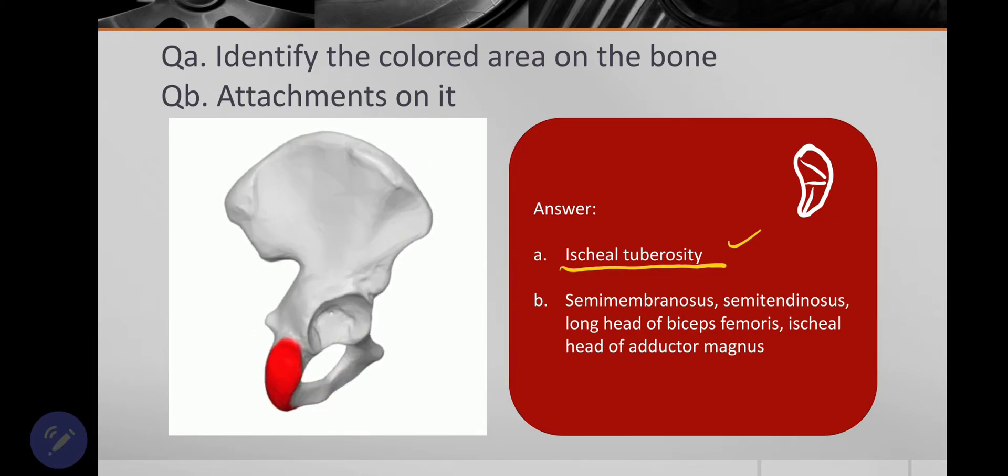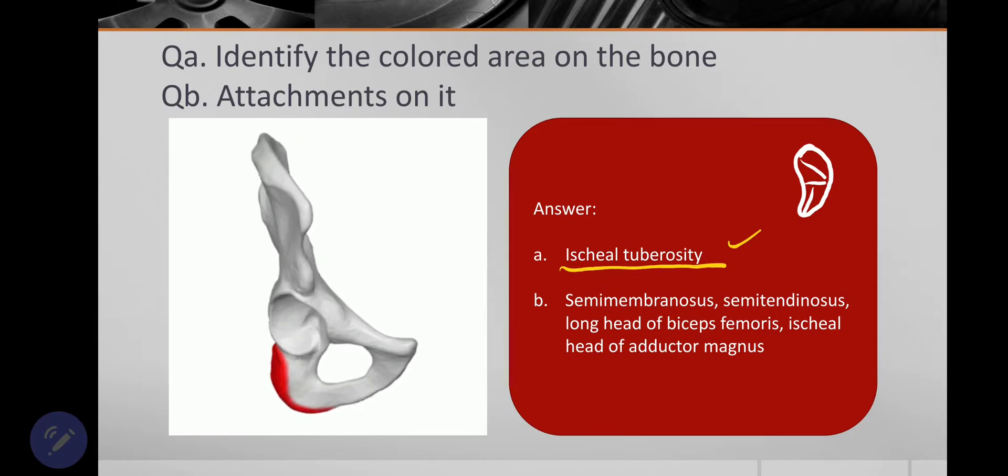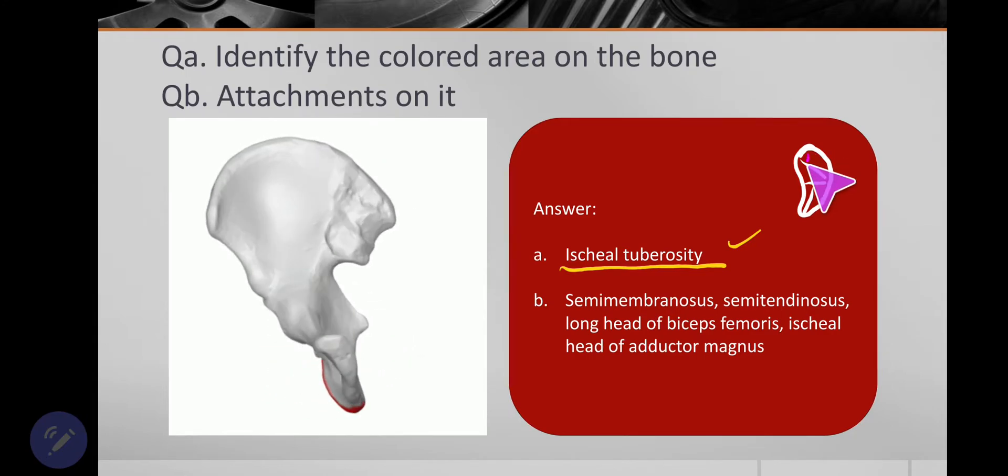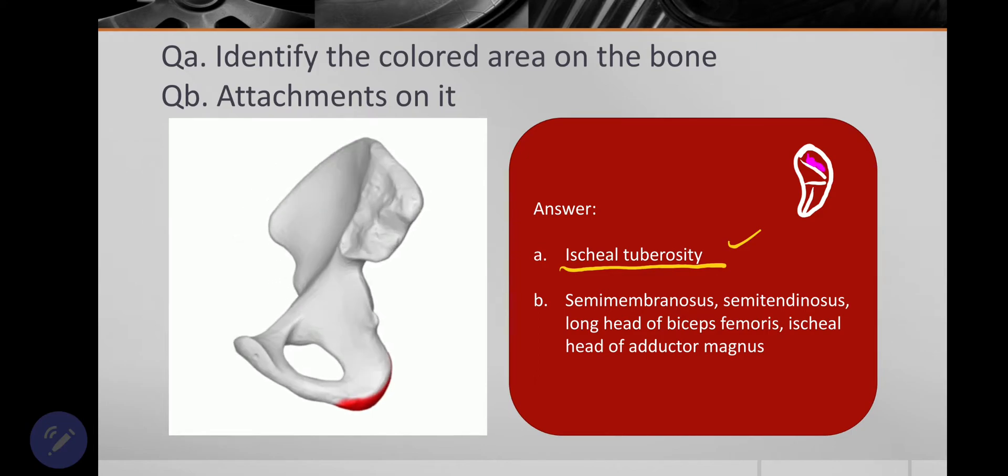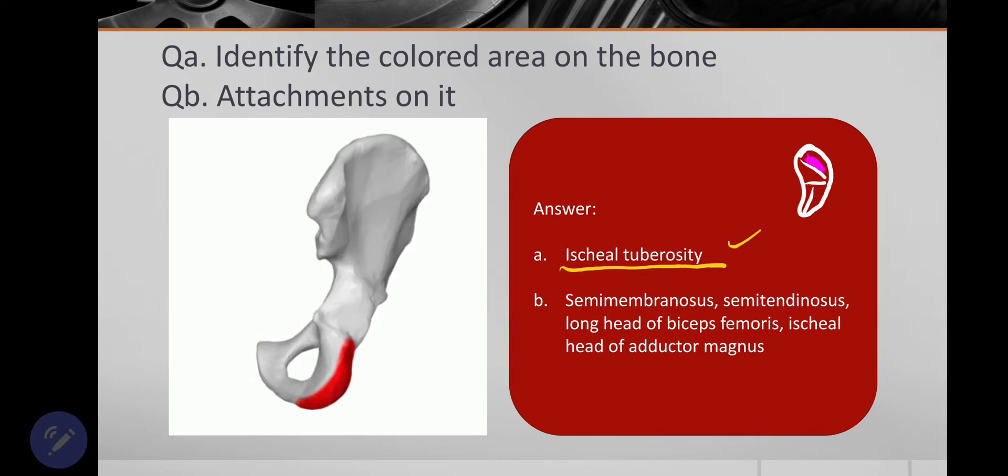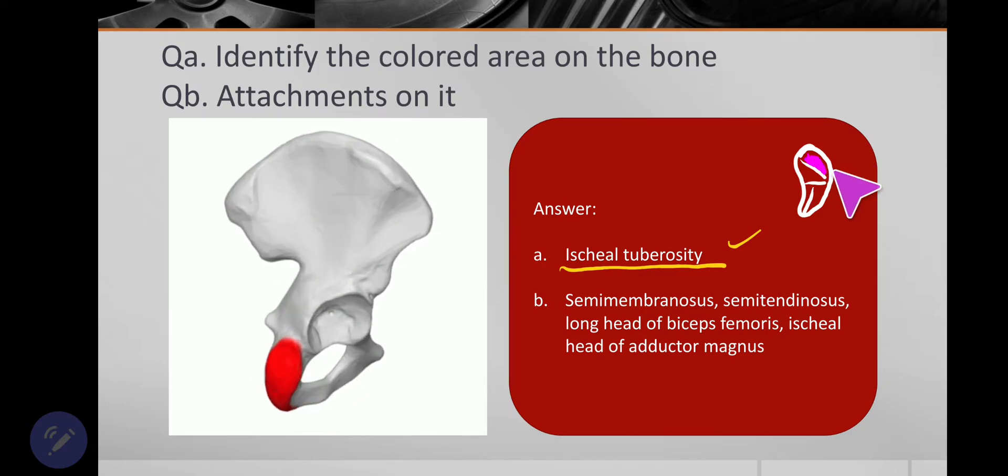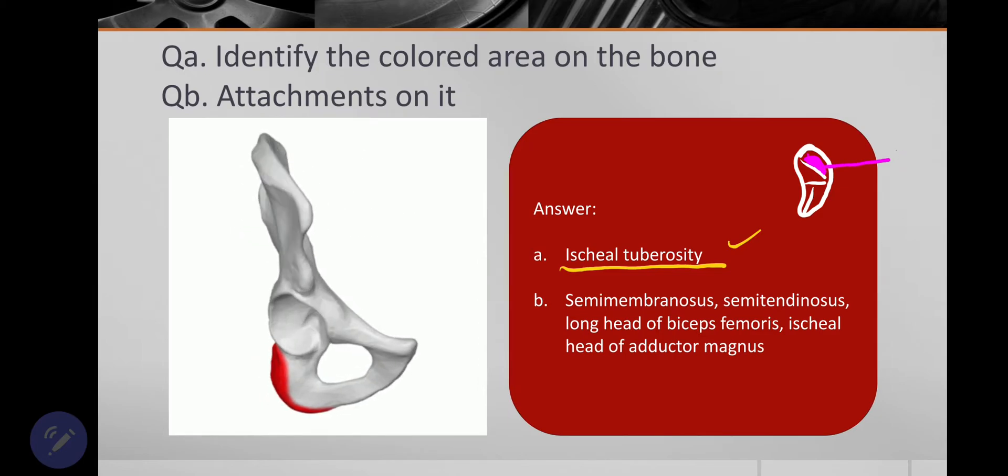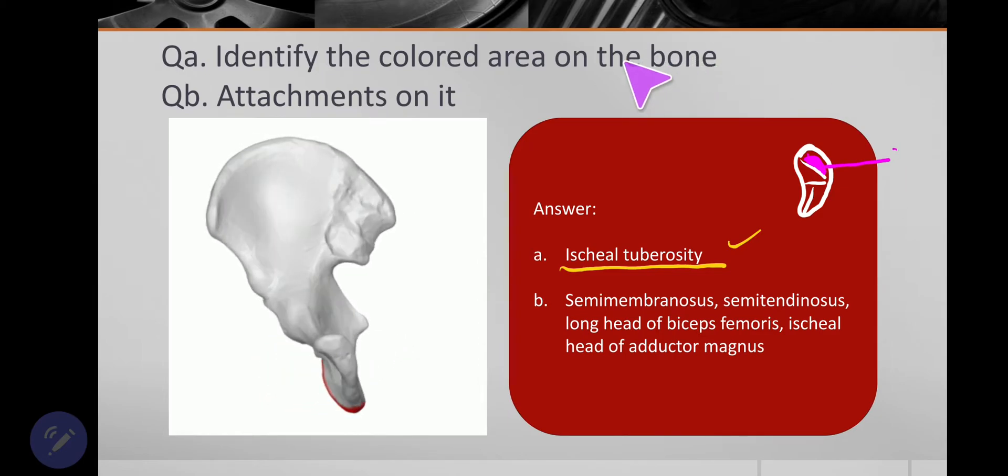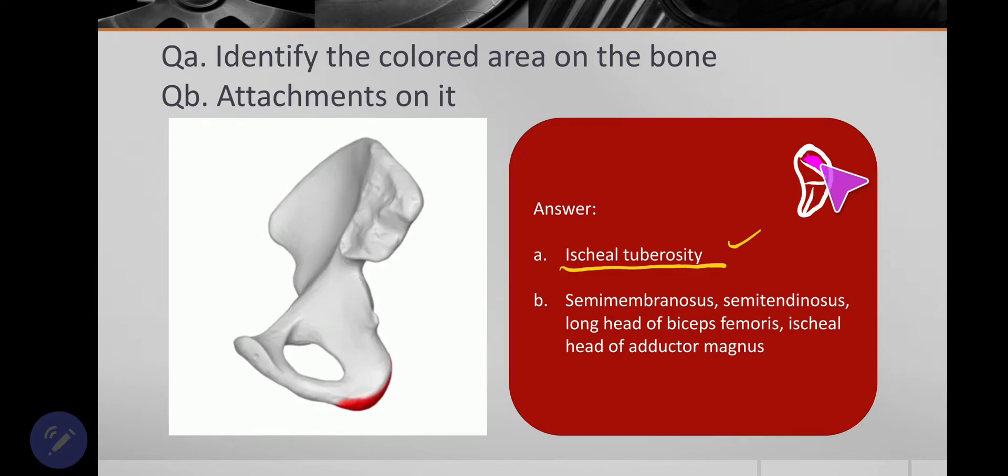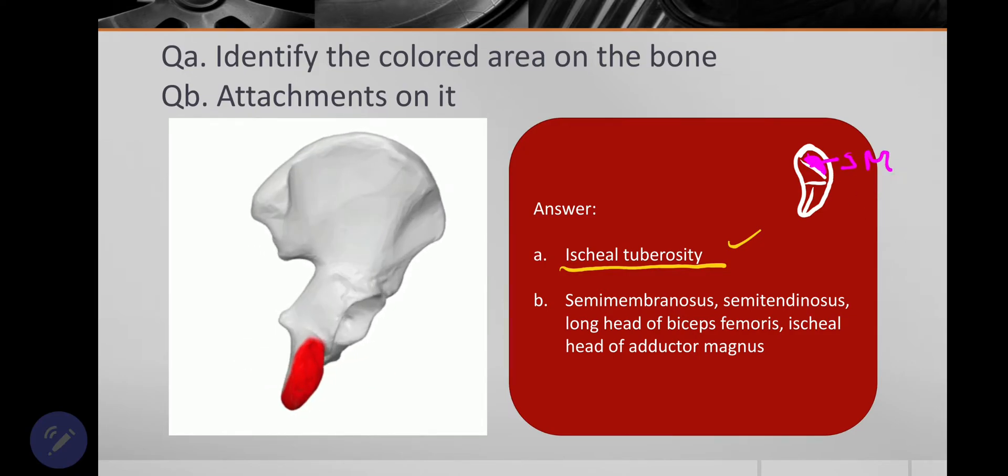Now about the attachment of muscles. So let me tell you that from the supralateral surface on the ischial tuberosity, there is origin of this muscle called semimembranosus. So this muscle is semimembranosus.